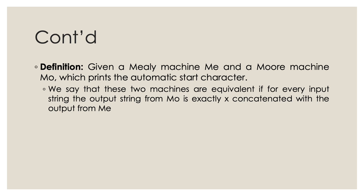Given a Mealy machine Me and a Moore machine Mo which prints the automatic start character, we say these two machines are equivalent if for every input string the output string from Mo is exactly X concatenated with the output from Me. Rather than debating the merits of the two machines, we shall prove that for every Moore machine there is an equivalent Mealy machine, and for every Mealy machine there is an equivalent Moore machine. We shall take one way of the transformation — Moore to Mealy — through a constructive proof, and likewise we shall do the conversion Mealy to Moore.